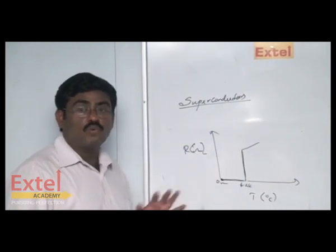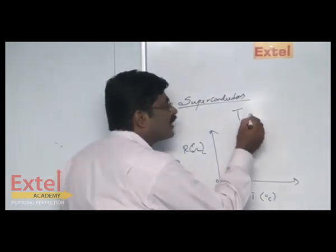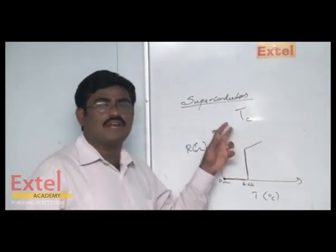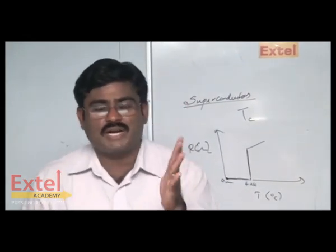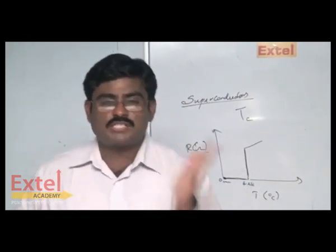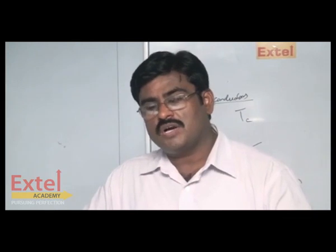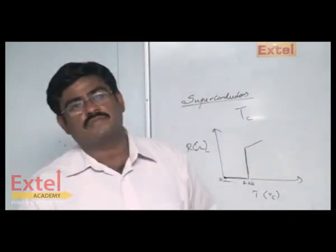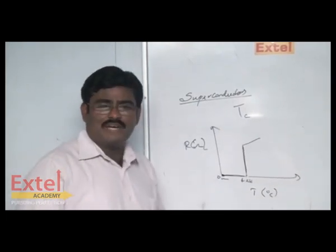Another important concept: what is known as critical temperature? Critical temperature, referred to by the symbol Tc, is also called transition temperature. The temperature at which a normal conductor starts behaving as a superconductor is called the critical temperature, otherwise known as the transition temperature.